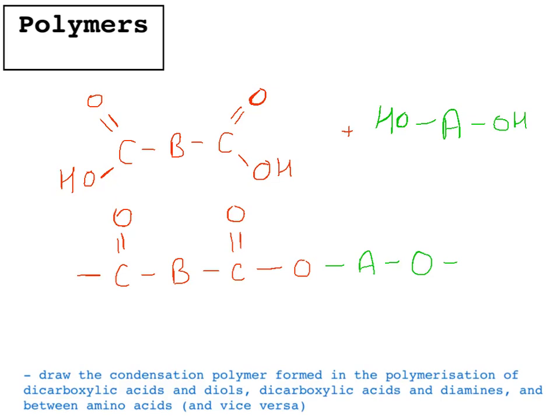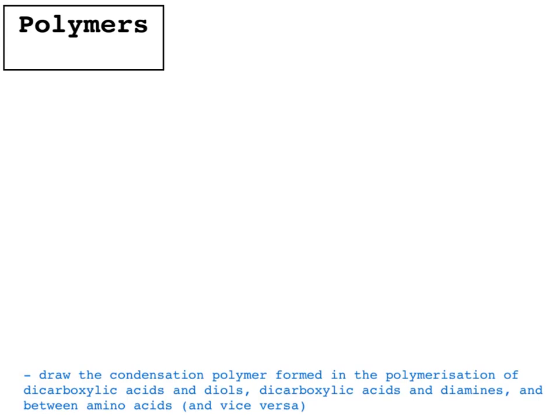The next thing we're going to look at is a dicarboxylic acid and a diamine. I'll draw in green this time. Again, B in the middle. And we'll have a diamine. We'll put A in the middle there. So that's an NH2 group on either side.